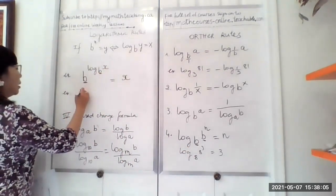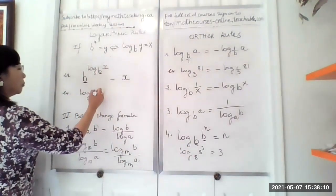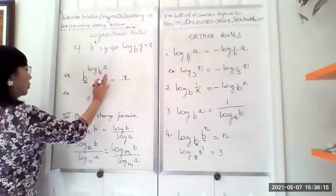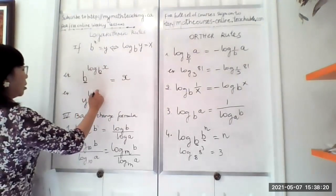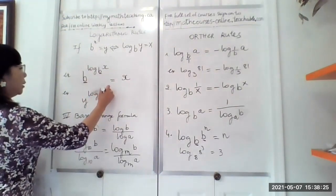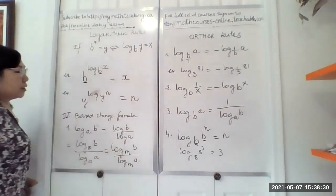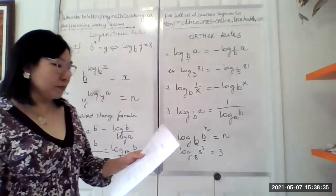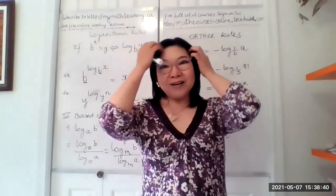The last rule: if you have base b raised to the power of log base b of x, as long as the outer base and the log's base are the same, the answer is just x. In other words, if you have base y to the power of log base y of n, the answer is simply n. This completes all the rules of the logarithmic function.